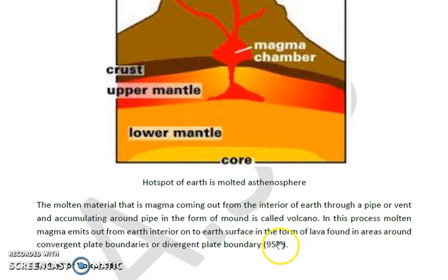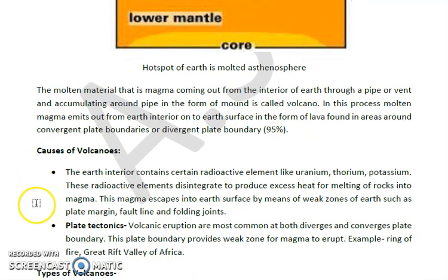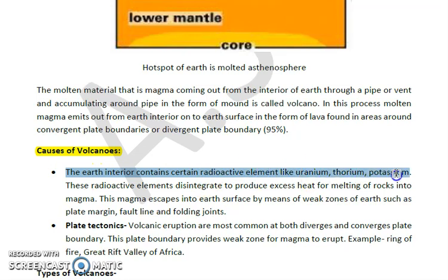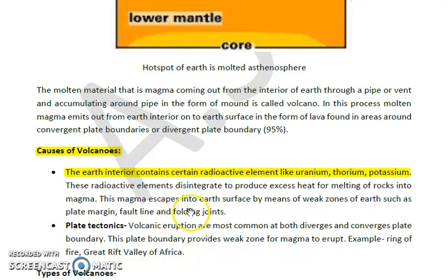There are specific causes of volcanoes. One reason is that the interior of the earth contains many radioactive elements like uranium, thorium, and potassium. These radioactive elements undergo disintegration, which produces a lot of heat and energy, melting rock into magma. This magma tries to escape to the earth's surface through weak zones such as plate margins, fault lines, and joints, coming out in the form of lava — this is one cause of volcanic eruption.